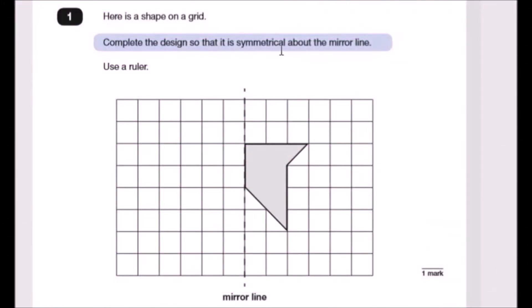Complete the design so that it is symmetrical about the mirror line. Okay, this is easy and again we have to use a ruler here. So all we should really do is just pretty much start from here and just extend the line across. So we're going to have something like three across here and then we just go...